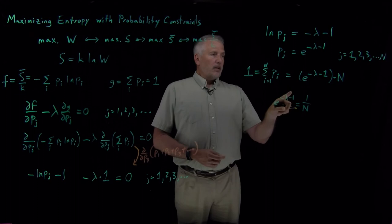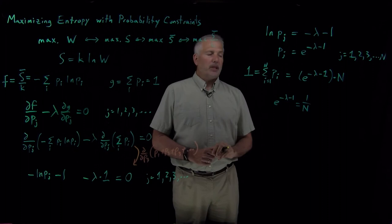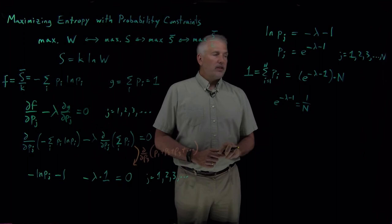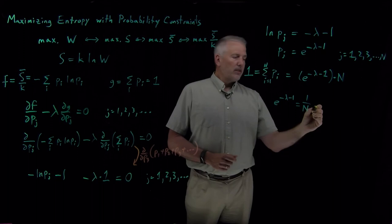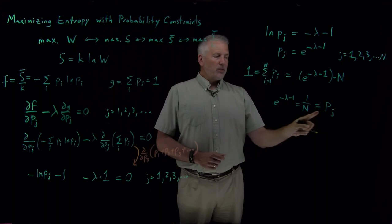And we could continue and solve for the value of lambda, but remember, we don't actually care what the value of lambda is. Knowing that e to the minus lambda minus 1 is equal to 1 over N is enough information to tell us that since each of these probabilities is equal to e to the minus lambda minus 1, P sub 1 is equal to this, P sub 2 is equal to this, P sub 3 is equal to this. All the probabilities have to be 1 over N.